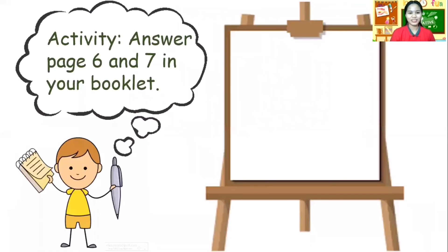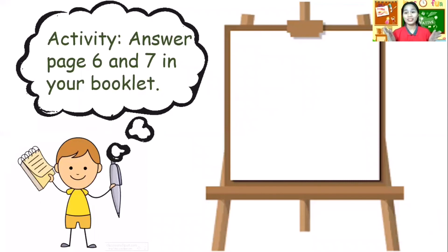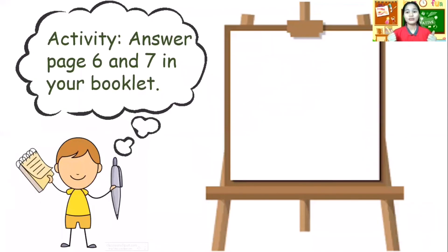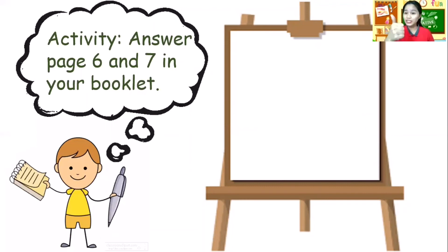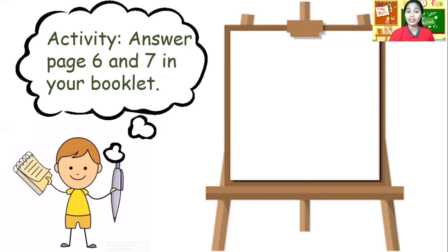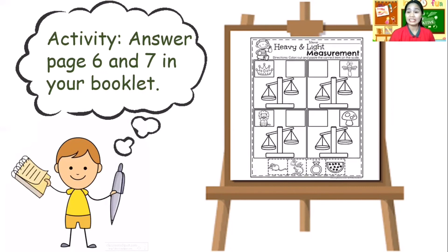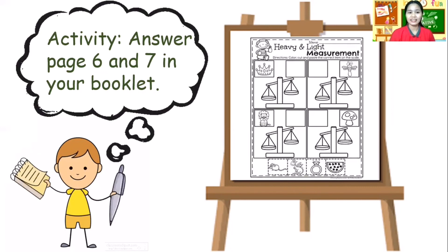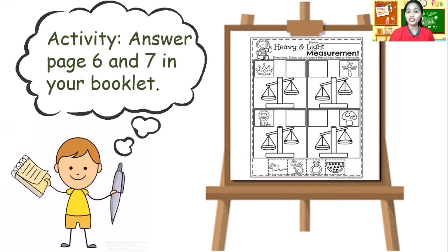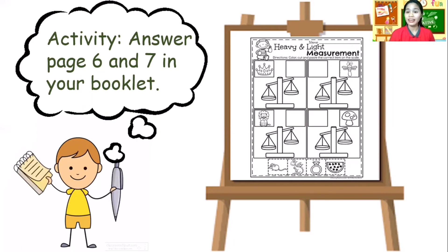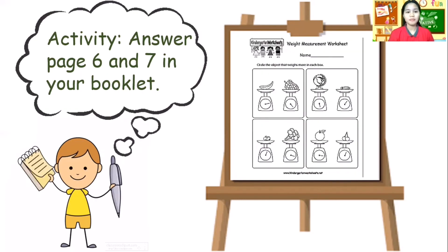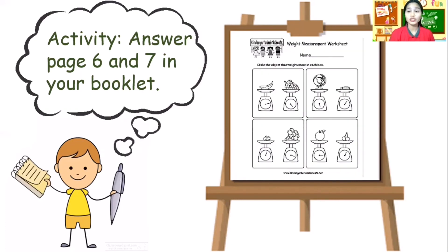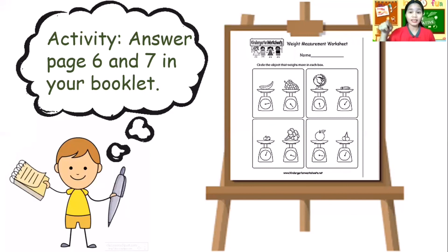So since we're finished already and you are doing a good job, you are going to answer your workbook or booklet on page six, and then you are going to measure or identify heavy and light. Okay, on page seven you're going to circle the object that weighs more.